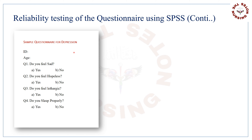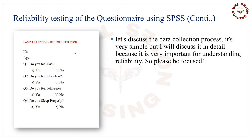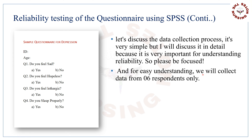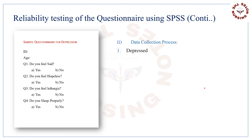Now let's discuss the data collection process. It's very simple, but I will discuss it in detail because it is very important for understanding reliability, so please be focused. For easy understanding, we will collect data from 6 respondents only. Imagine you are collecting data in a ward of the hospital from a depressed respondent; then the expected answers may be like this.